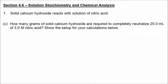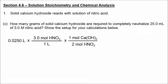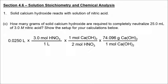We can also go in the other direction — starting with volume of nitric acid to find grams of calcium hydroxide. Starting with 25.0 milliliters, or 0.0250 liters, we first use molarity as a conversion factor to get moles of nitric acid, then apply the balanced equation ratio to get moles of calcium hydroxide, and finally convert to grams using molar mass. Rounded to 2 significant figures, we get 2.8 grams of calcium hydroxide.